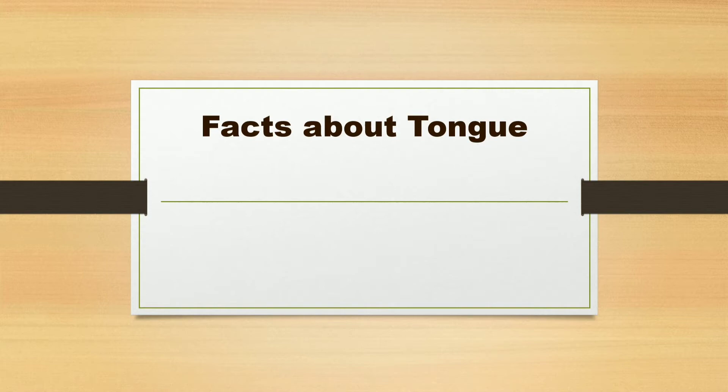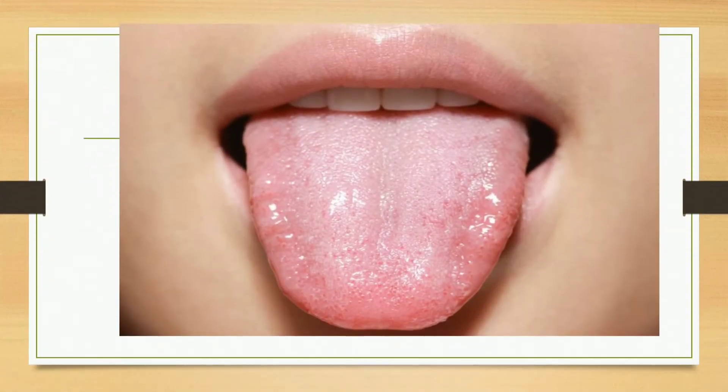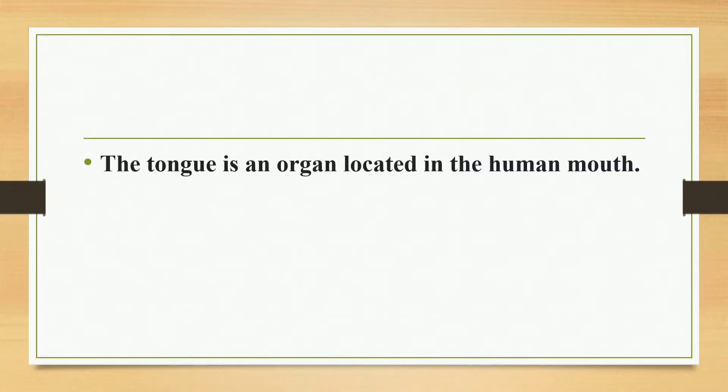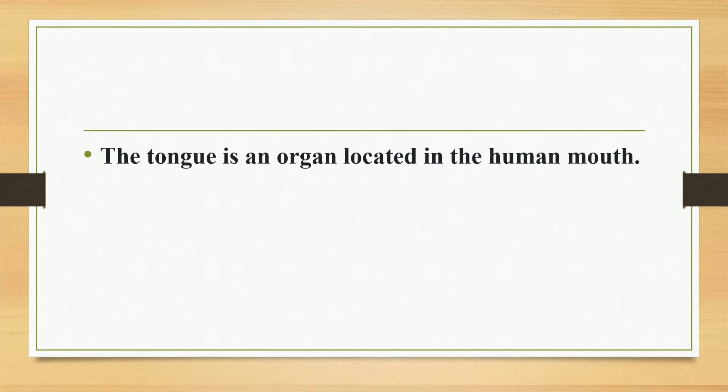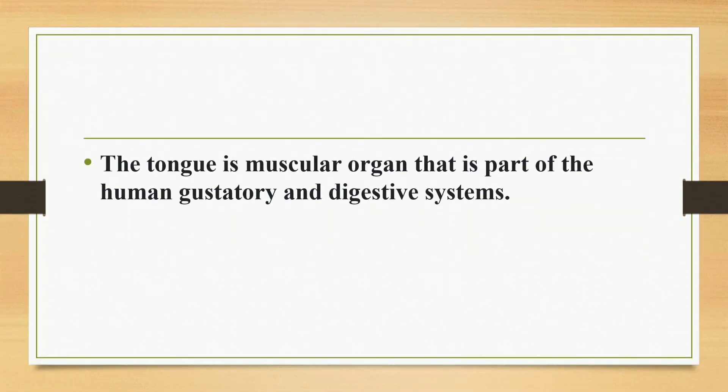Facts about tongue. The tongue is an organ located in the human mouth. The tongue is a muscular organ that is part of the human gustatory and digestive systems.